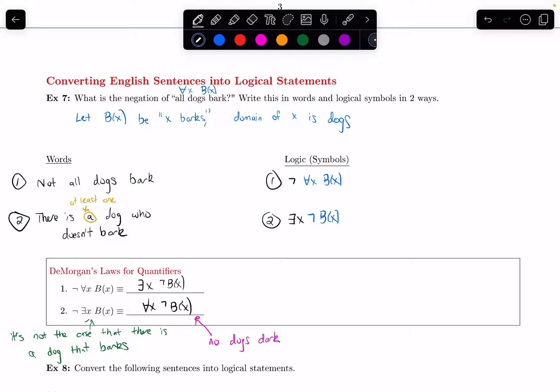So the shorthand way to remember this is when I want to negate a quantifier, we can bring the negation inside. And when that happens, the quantifier changes. So the for all changes to a there exists, and the there exists changes to a for all like this. But when in doubt, I think the most important thing to take away from this is referring to an example and seeing what happens when I negate it and what's another equivalent way to express that.